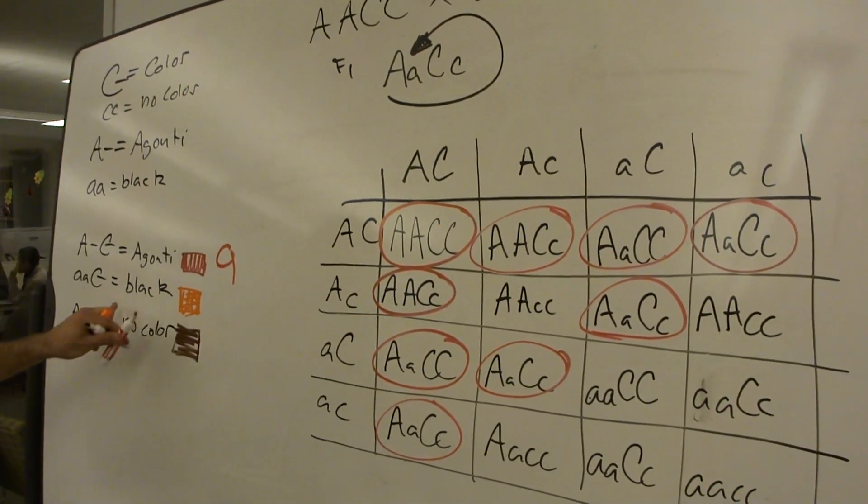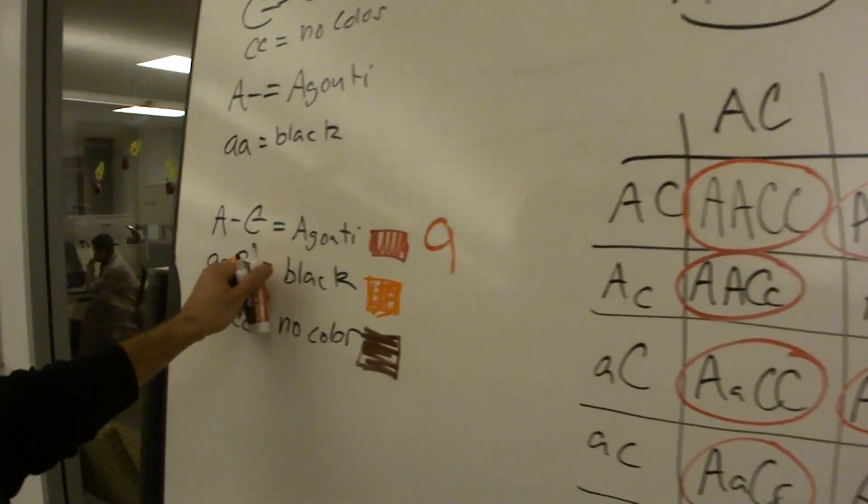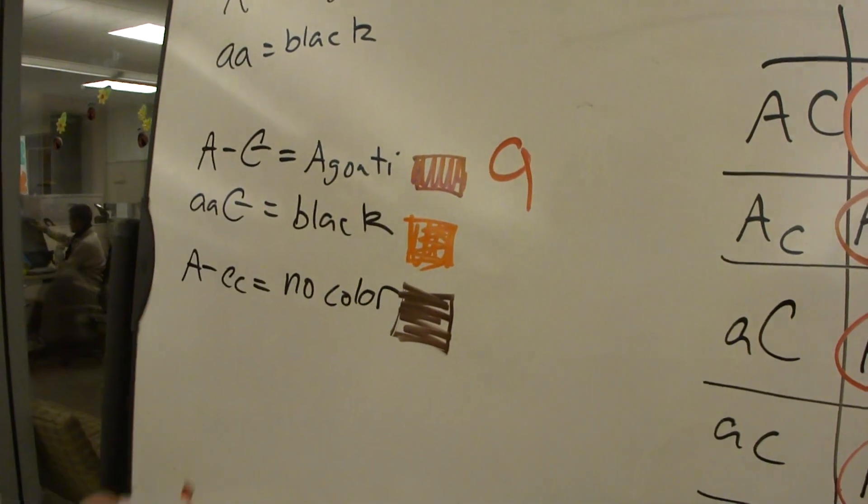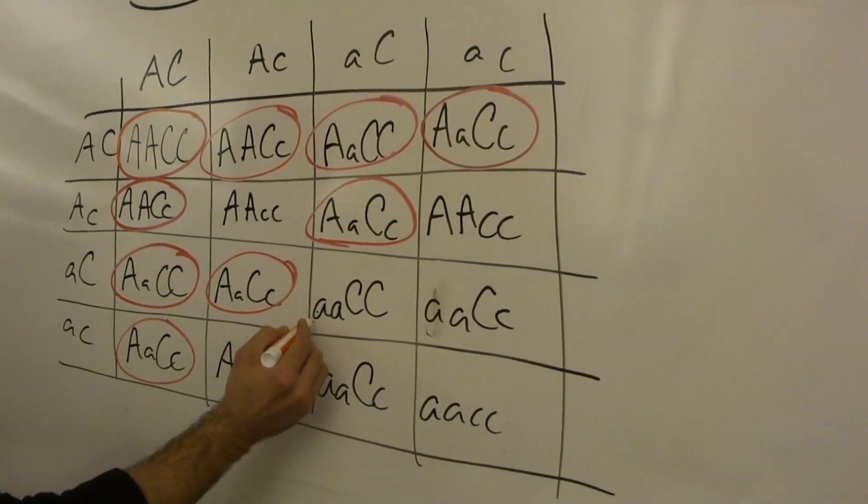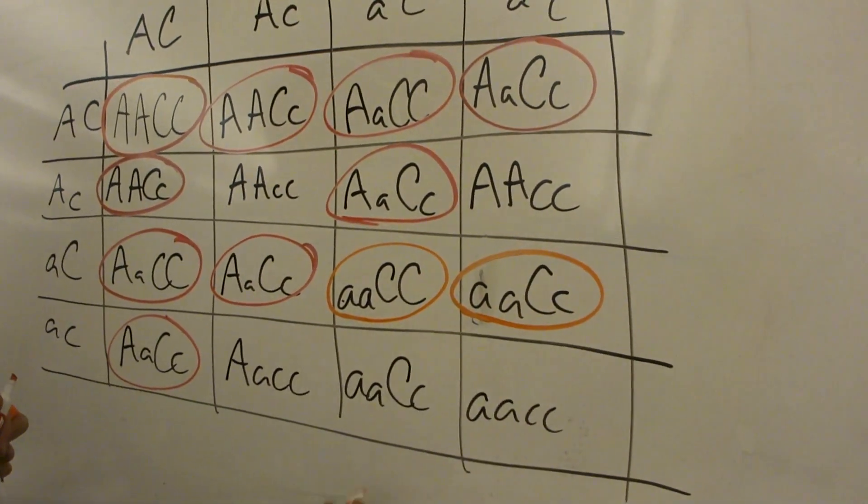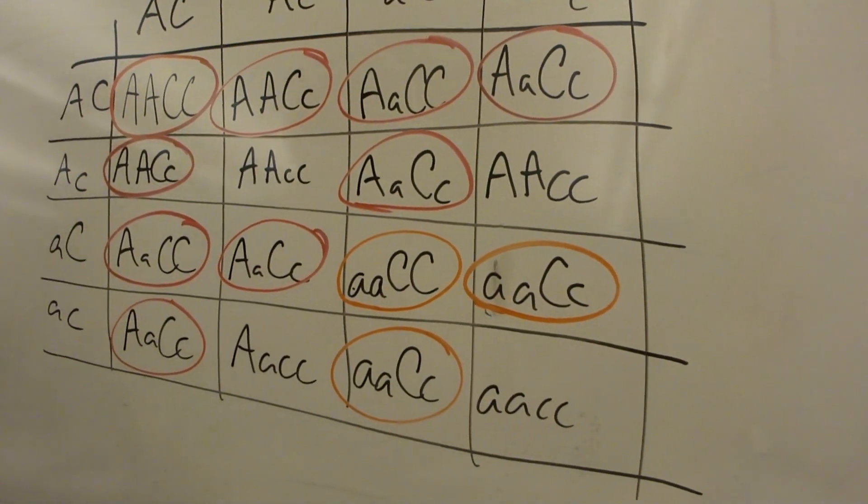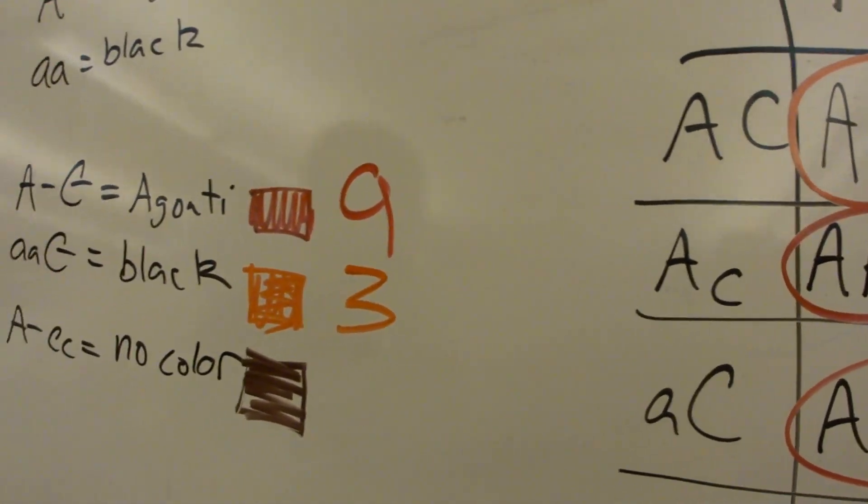Now let's go on to black. Black will be orange. So anything with little a, little a, and any combination of big C. So here we have little a, little a, big C, big C, here, and here. And that's it, three.